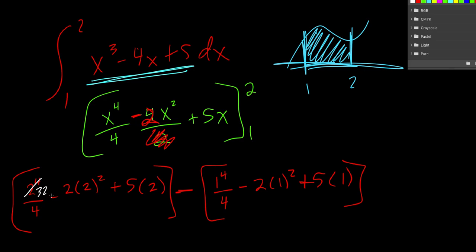So this is 32 divided by 4 gives us an 8. And then 2 squared is 4. So for that, we get a negative 8, plus 10.